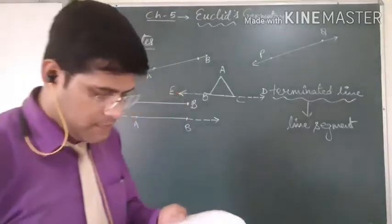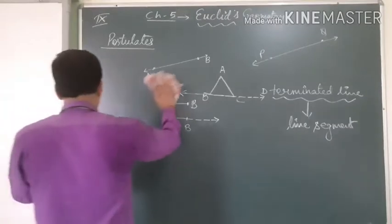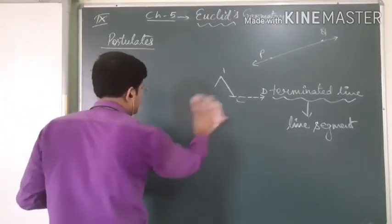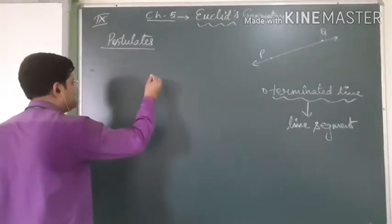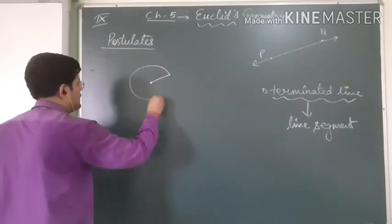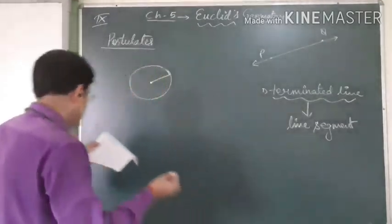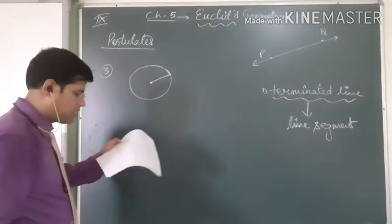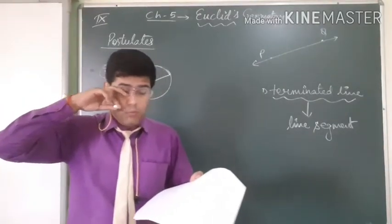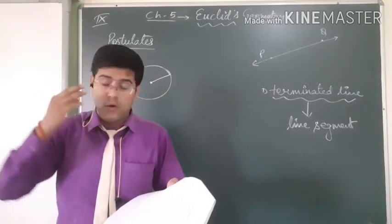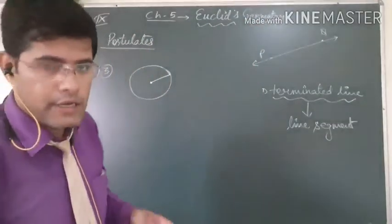The third postulate: a circle can be drawn with any center and any radius. To draw a circle you only need two things — first is the center and second is the radius. No more than two things are required to make a circle.